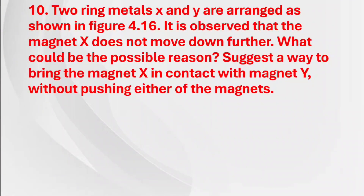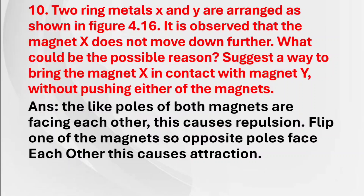Tenth question: Two ring magnets X and Y are arranged as shown in figure 4.16. It is observed that magnet X does not move down further. What could be the possible reason? Suggest a way to bring magnet X in contact with magnet Y without pushing either of the magnets. Answer: The like poles of both magnets are facing each other, causing repulsion. Flip one of the magnets so that opposite poles face each other, causing attraction.